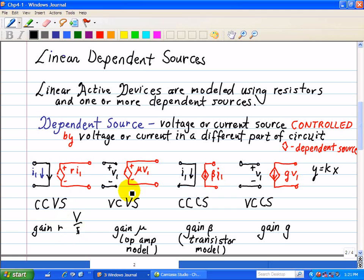For VCVS, we have voltage output and voltage input. This is a dimensionless parameter we call mu, the gain for this type of dependent source. This is usually a model for an operational amplifier.